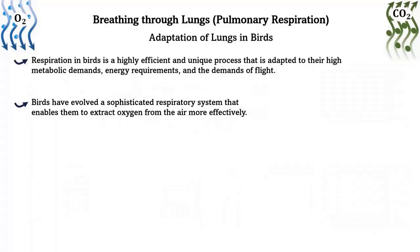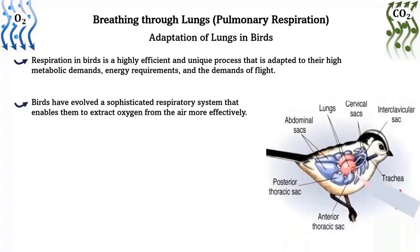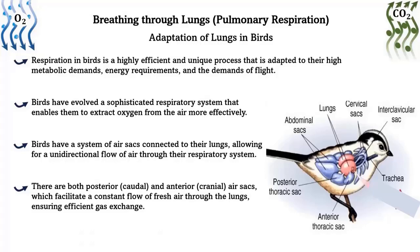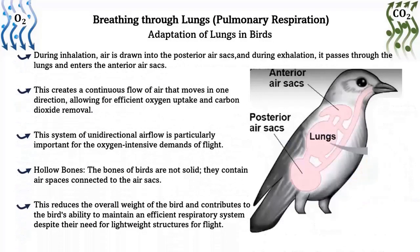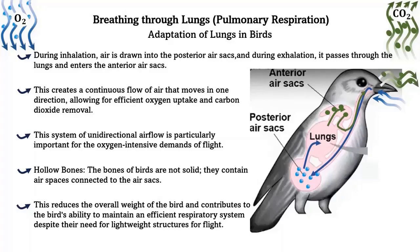Adaptation of lungs in birds: respiration in birds is a highly efficient and unique process adapted to their high metabolic demands and the demands of flight. Birds have evolved a sophisticated respiratory system that enables them to extract oxygen from the air more efficiently. Birds have a system of air sacs connected to their lungs, allowing for a unidirectional flow of air through their respiratory system. There are both posterior and anterior air sacs which facilitate a constant flow of fresh air through the lungs, ensuring efficient gas exchange. During inhalation, air is drawn into the posterior air sac, and during exhalation it passes through the lungs and enters the anterior air sac, creating a continuous one-directional flow allowing for efficient oxygen uptake and carbon dioxide removal.